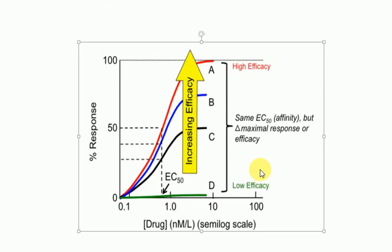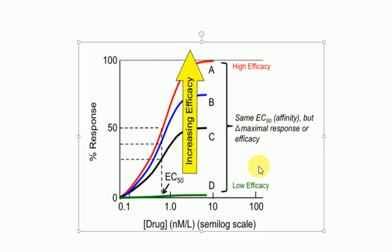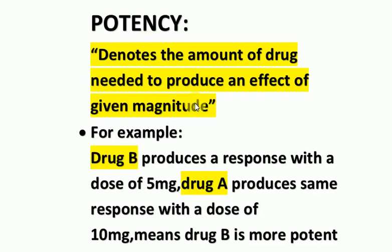Suppose drugs A, B, and C are to be used in the same disease. Since we need a greater response to be achieved, we would choose drug A in this case because it has the highest efficacy. That's all about efficacy. Now moving towards potency.